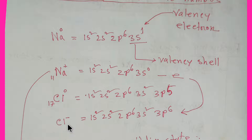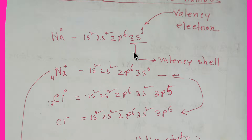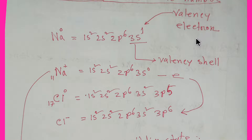In its normal state, sodium's oxidation state will be zero because it will not lose any electron. The valence shell of sodium is 3s, and the electron contained in the valence shell is called a valence electron. So here, the 3s electron is the valence electron for sodium.